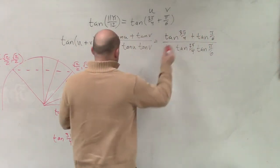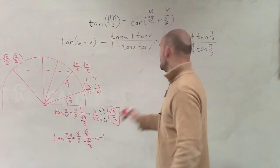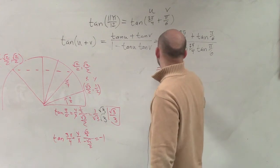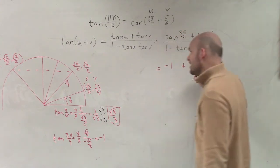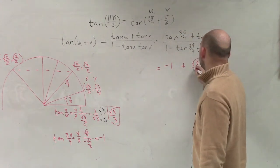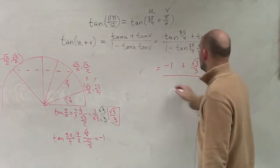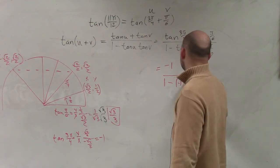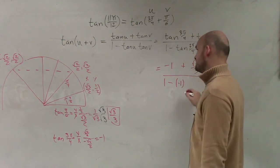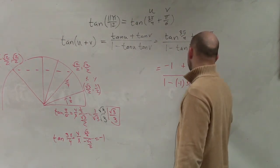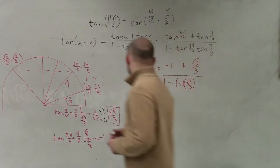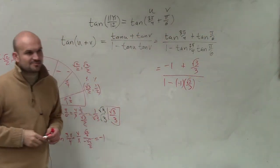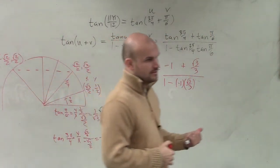So therefore now, tangent of 3π over 4 is negative 1 plus tangent of π over 6, which is square root of 3 over 3 divided by 1 minus tangent of 3π over 4, which is negative 1 times tangent of π over 6, which is square root of 3 over 3. Does everybody see how I just plugged that in?